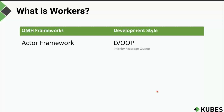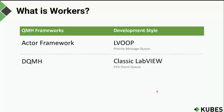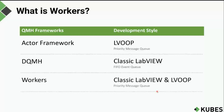First, we have the Actor Framework, which is a heavily object-oriented style framework that uses priority message queues to send messages between modular QMH handlers known as actors. Then we have DQMH, which I call a classic LabVIEW style framework — it is not object-oriented and uses FIFO first-in-first-out event queues to send messages between modular QMH handlers known as modules.